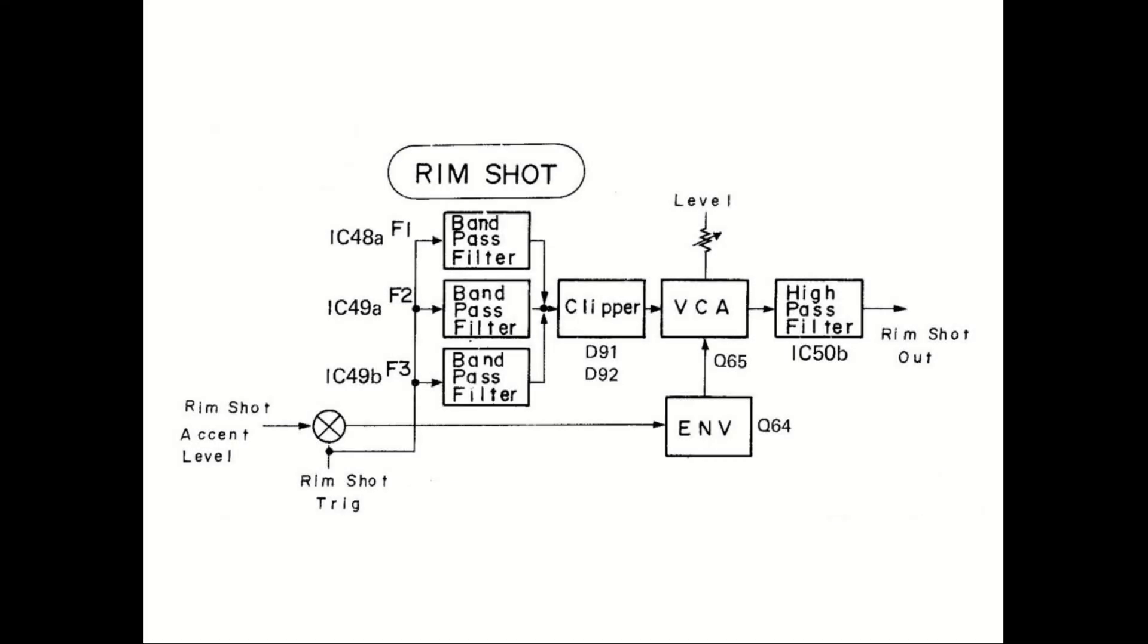The circuit consists of three bandpass filters that when triggered will produce an impulse on the output, a sine wave of the center frequency that decays over time. The outputs are mixed together, clipped with a pair of diodes and further shaped with a fixed envelope generator and VCA. The final stage is a high-pass filter.